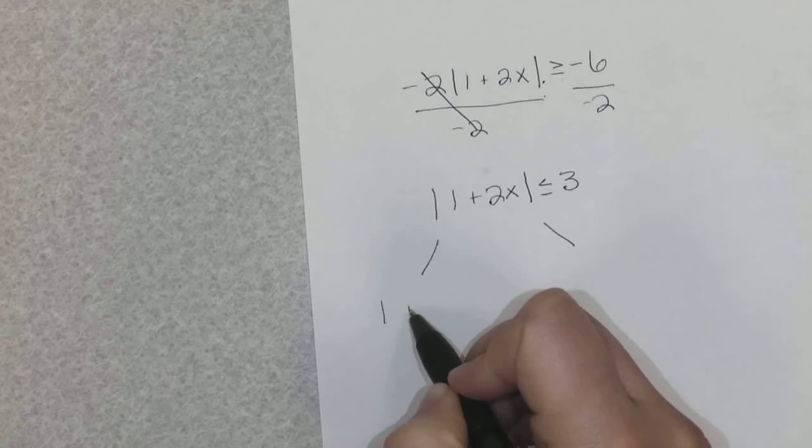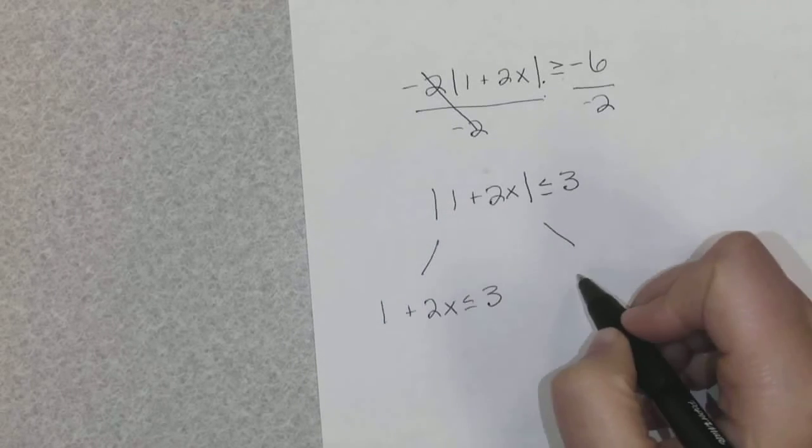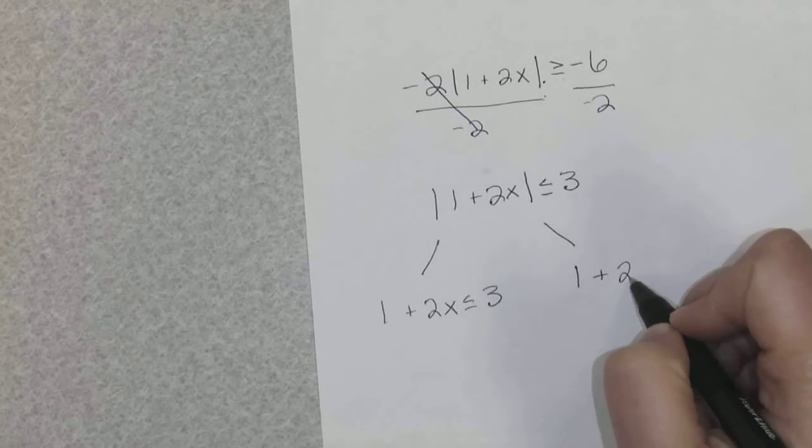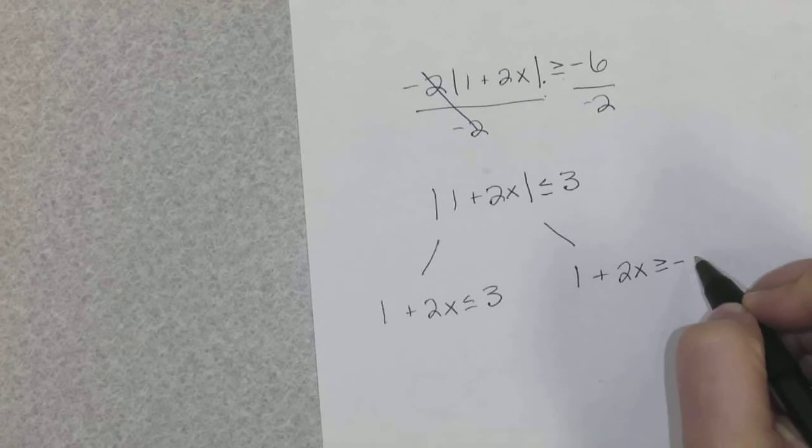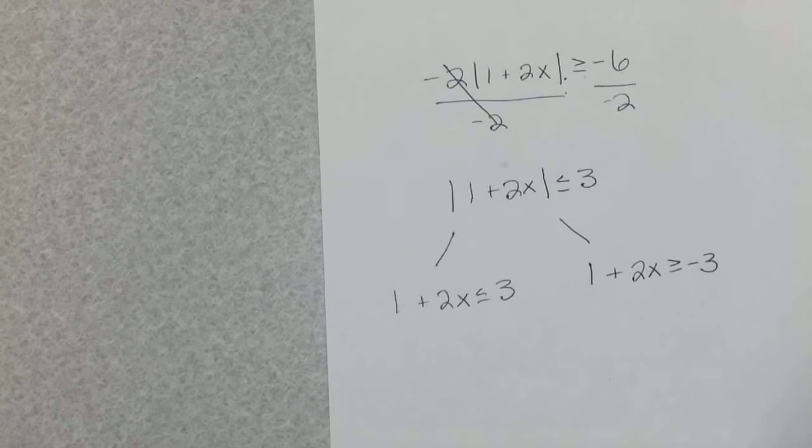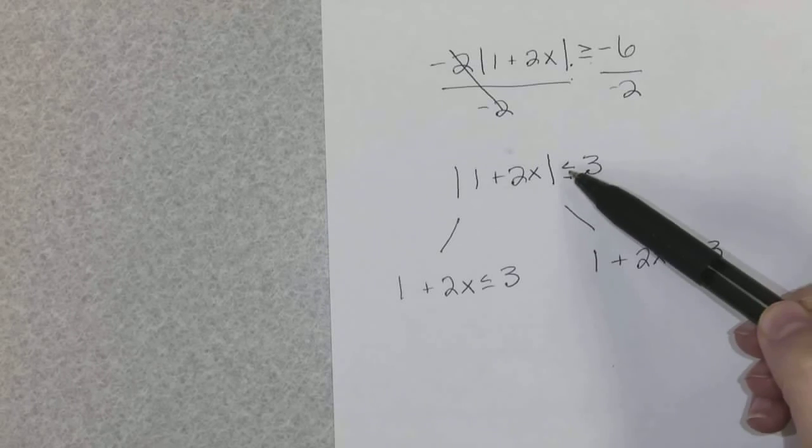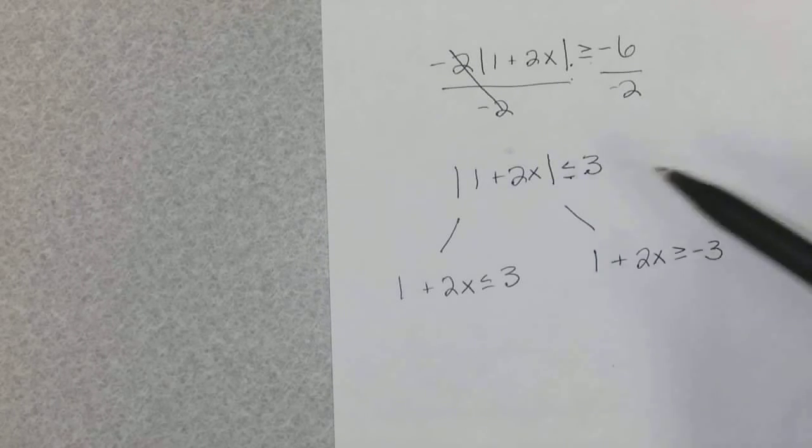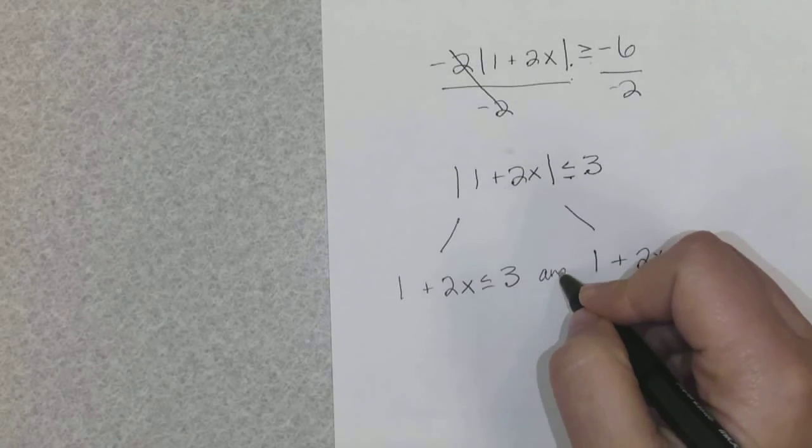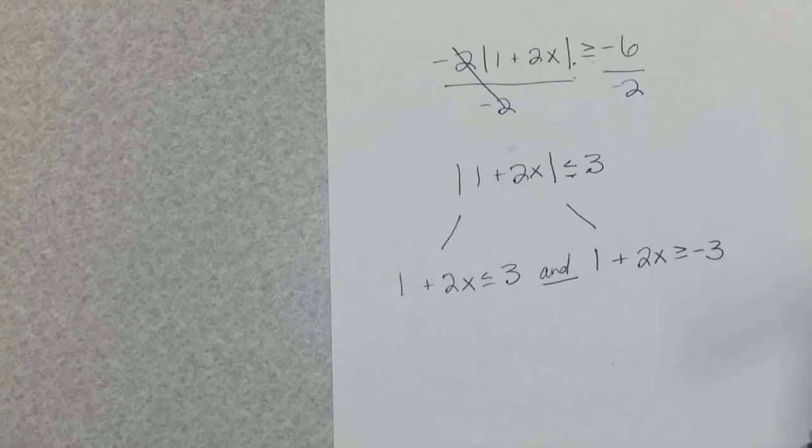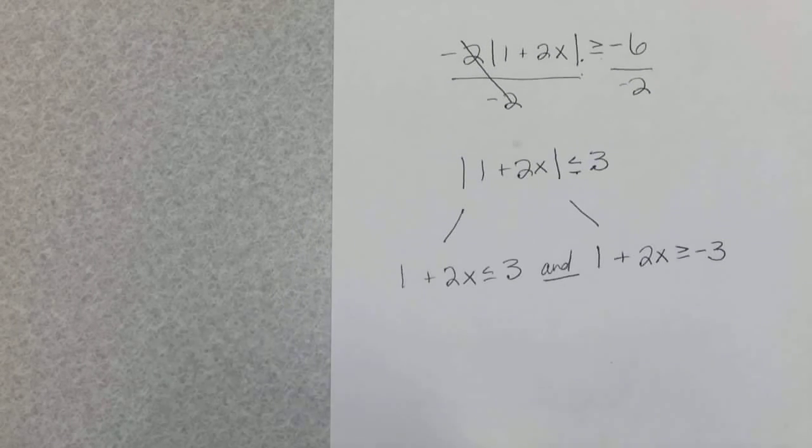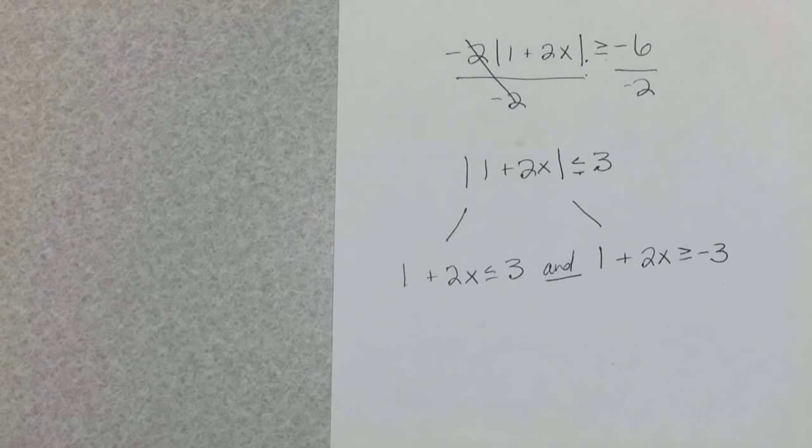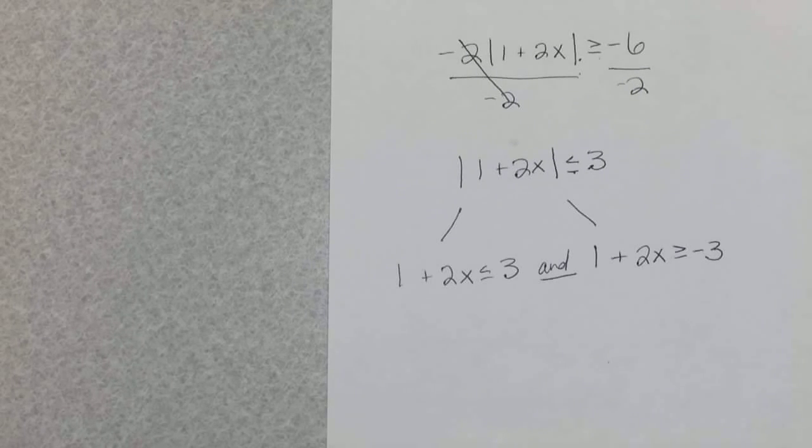So 1 plus 2x less than or equal to 3, and 1 plus 2x greater than or equal to negative 3. So this sign right here is less than or equal to, making this an and inequality. So then you would just solve for x and graph and shade your answer. So that's it, thanks again for watching.